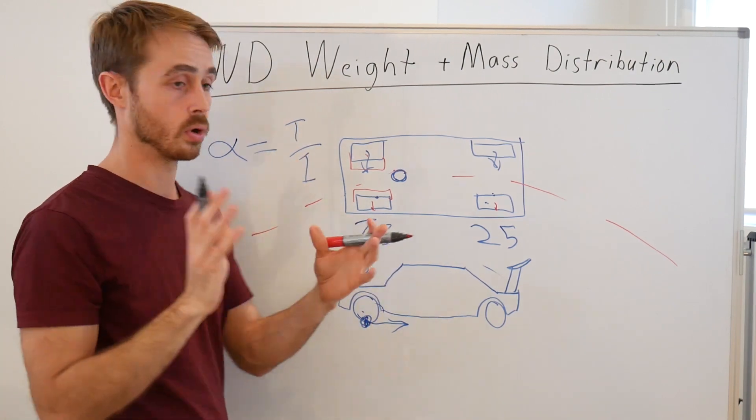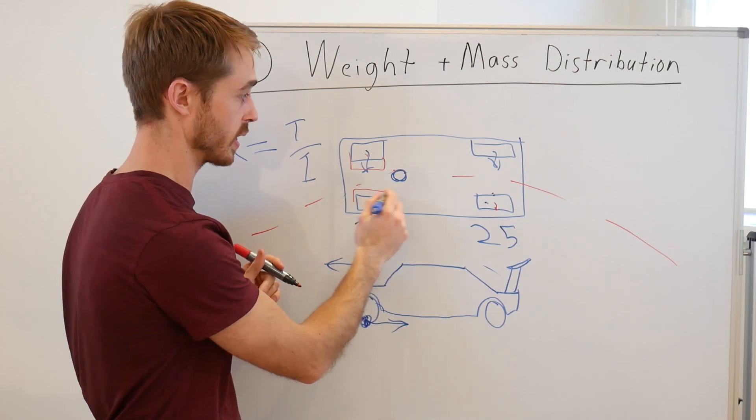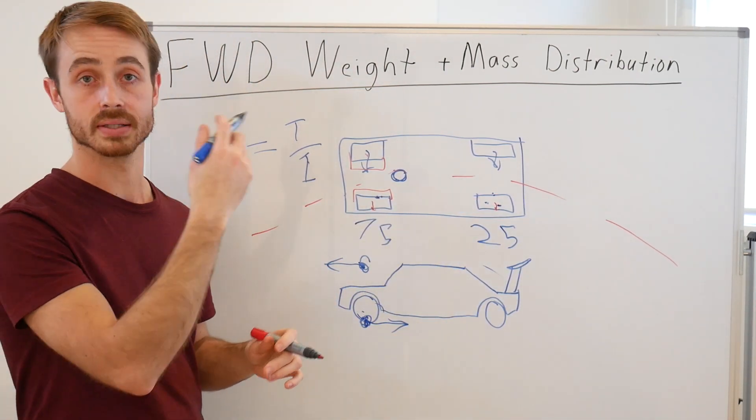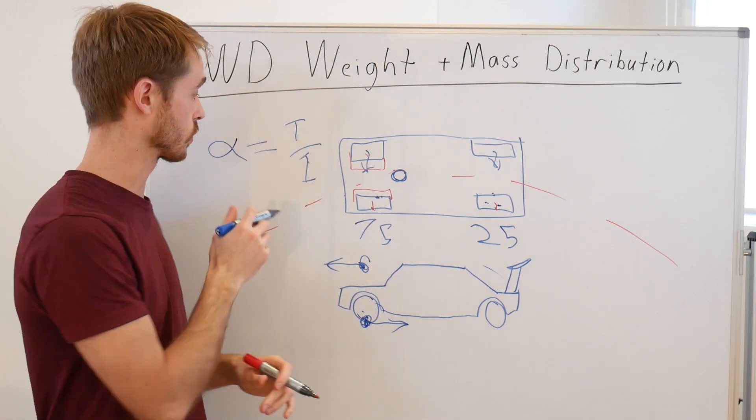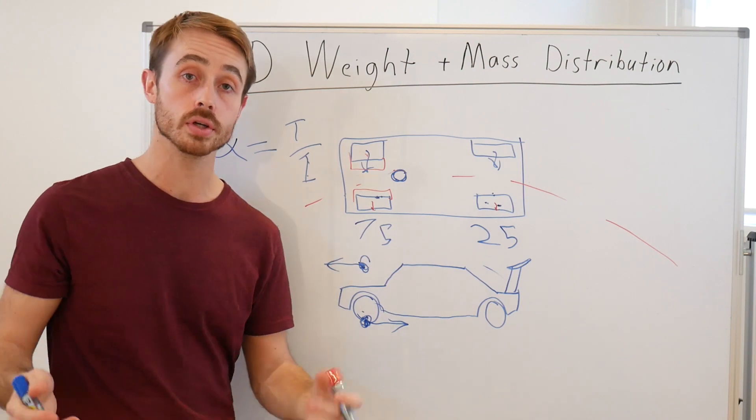Now the T stands for our torque, which is more or less our turning force into the corner provided by steering the front wheels while the rear wheels are at zero angle. Our alpha is our angular acceleration of the car into the corner or out of the corner at corner exit. And I is the moment of inertia of the car, and this is the interesting one.